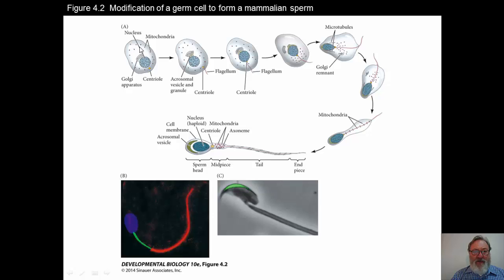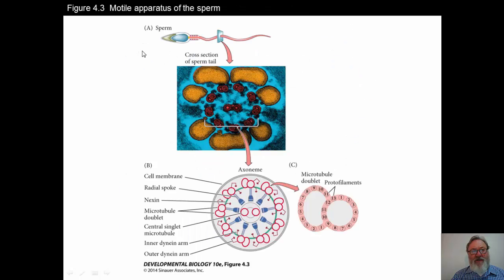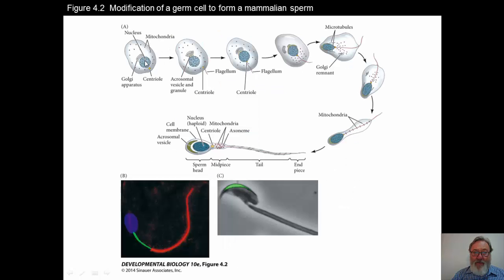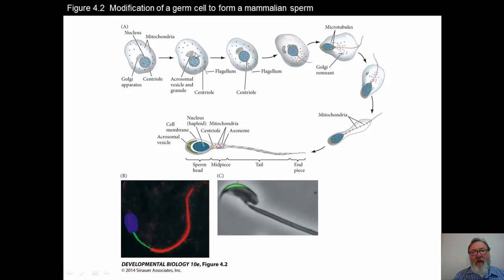Here you can see the germ cell — it's a relatively undifferentiated cell. The nucleus is haploid, of course. There's a well-developed Golgi apparatus, mitochondria, and a centriole that will give rise to microtubules and a flagellum. As development progresses, the acrosomal vesicle and granule start to form, and the centriole begins to form a flagellum, which will continue to grow as sperm maturation continues.